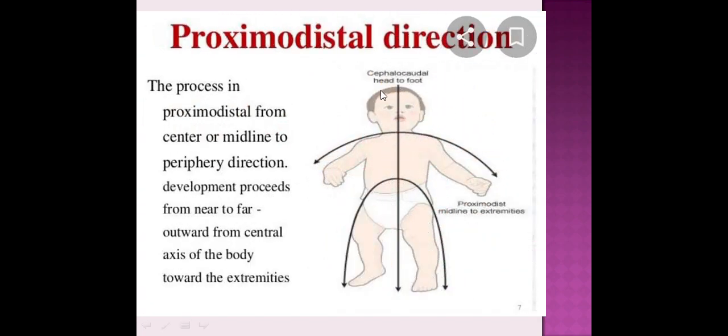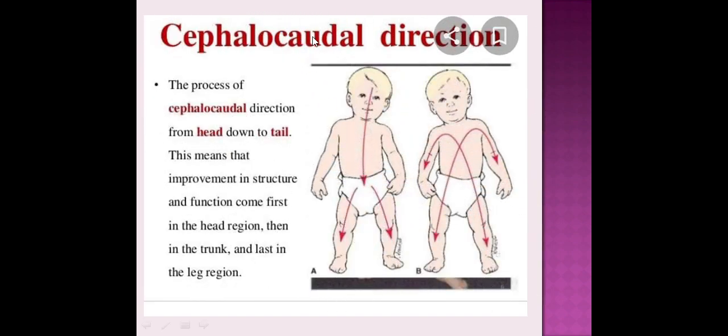See diagram B, proximodistal direction is from center to periphery. Cephalocaudal growth is head to foot, and proximodistal growth is midline to extremities. The process of cephalocaudal direction from head down to tail means that improvement in structure and function come first in the head region, then in the trunk region, and last in the leg region.